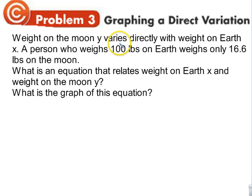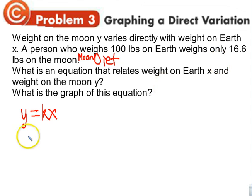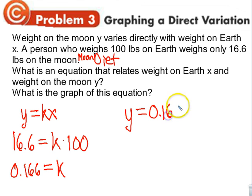Weight on the moon Y varies directly with weight on earth X. A person who weighs 100 pounds on earth weighs only 16.6 pounds on the moon. Using Y equals KX: plug in Y = 16.6 and X = 100, so K equals 16.6 divided by 100, which is 0.166. The equation is Y equals 0.166X.